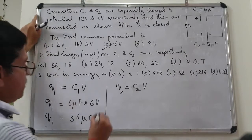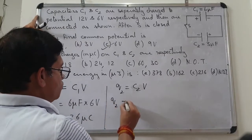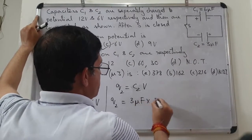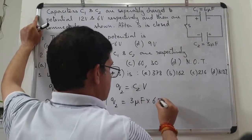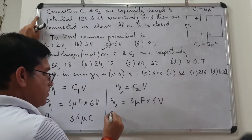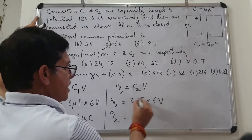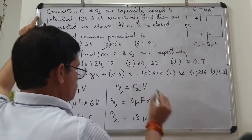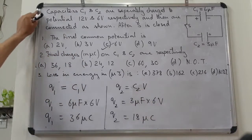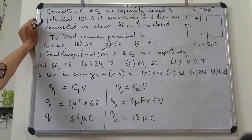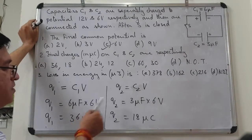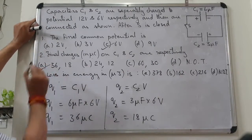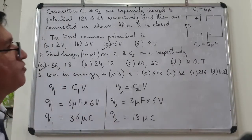Similarly, Q2 = C2 × V = 3μF × 6V = 18 microcoulomb. So finally C1 holds 36μC and C2 holds 18μC, giving a total final charge of 36 + 18 = 54 microcoulomb. यह law of conservation of charge verify करता है।